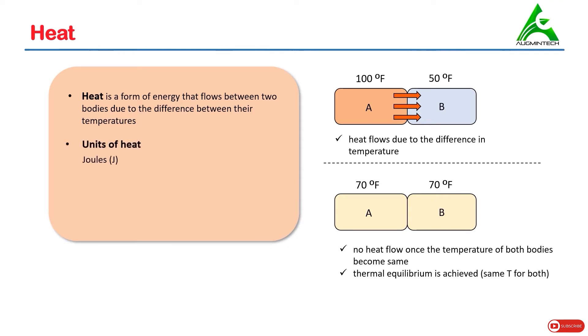Units of heat: Heat can be measured in joules which is the SI unit. It can also be measured in calories. British thermal unit: One British thermal unit equals 1055 joules. This will help you in converting between SI system and imperial system.